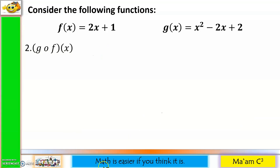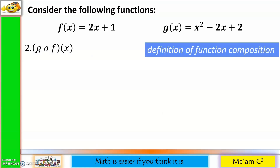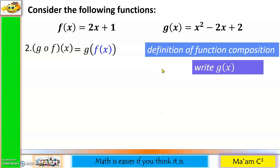Next, let us evaluate g∘f(x). First step: definition of function composition, so this becomes g of f(x). This time our first function is g. So the second step is to write g(x), and our g(x) is equal to x squared minus 2x plus 2.